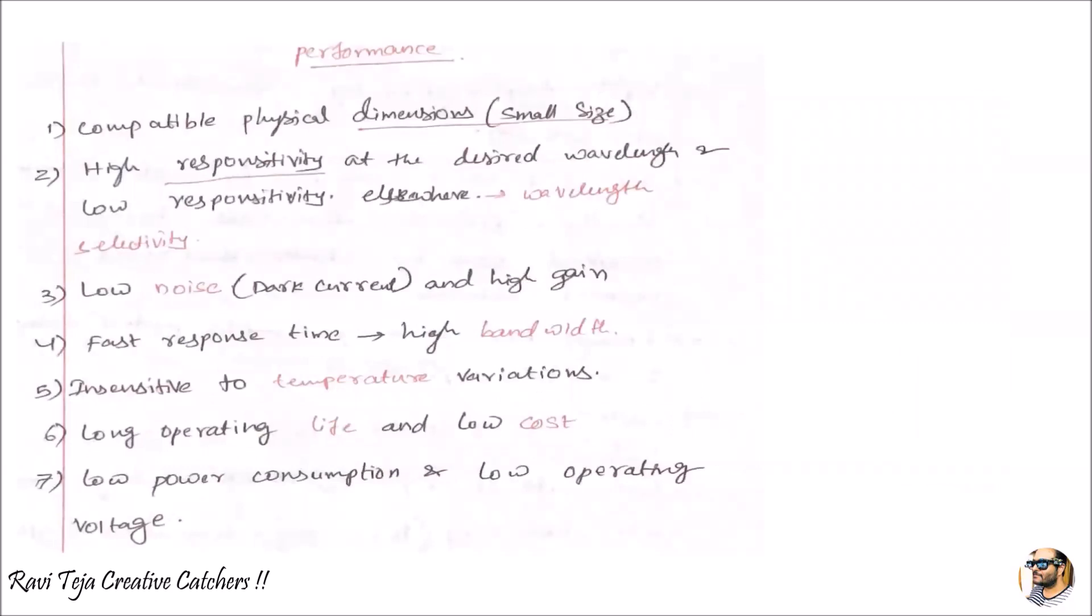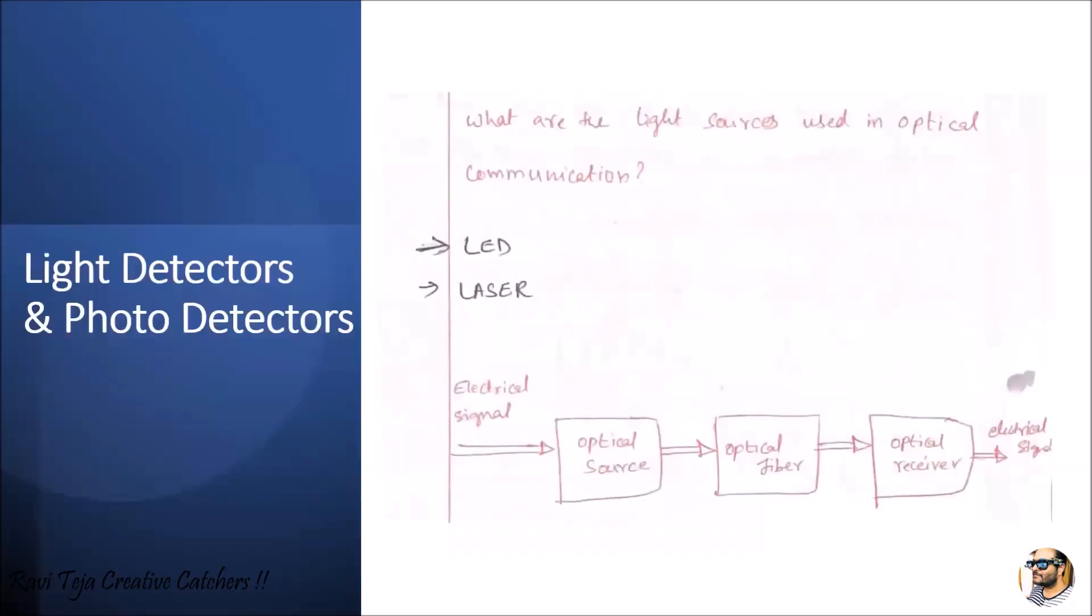Coming to the performance, these components are small in size. They have high responsivity with respect to wavelength and low noise. They have high gain and very fast response time with respect to bandwidth. They work with temperature variations, have long operating life, and come in less cost. The major advantage is they consume very less power and operate at very low voltage. These are some of the performance benefits and operation of light detectors and photodetectors.